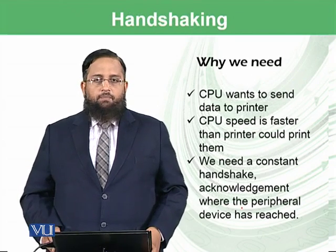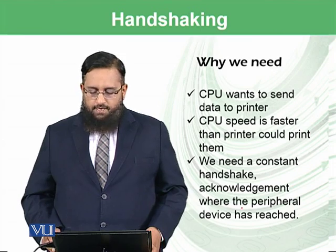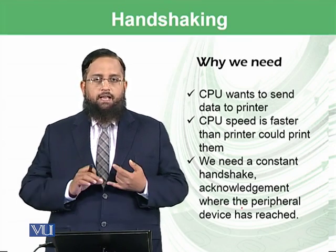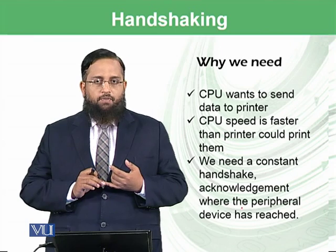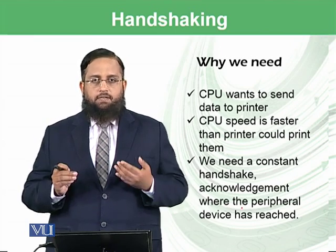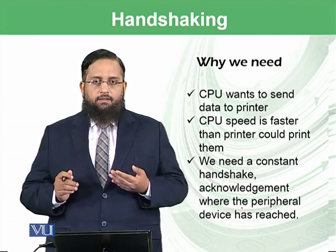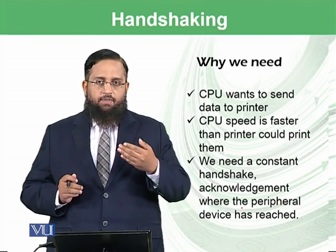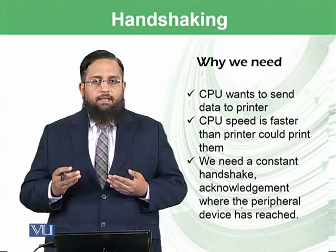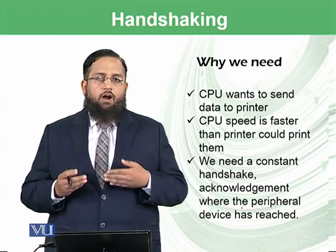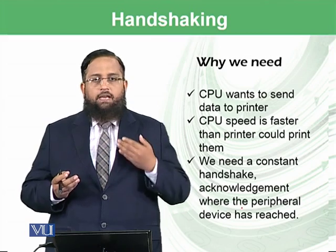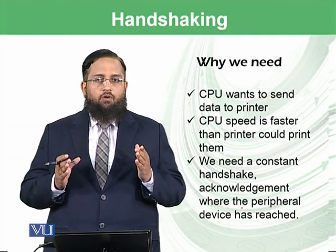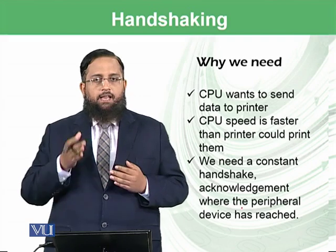The next topic is handshaking. The CPU wants to send data to the printer. As we mentioned, the speed of the CPU is very efficient — it can process billions of instructions per second. However, the speed of printing is not nearly as fast. If the CPU keeps sending data and the printer is not able to print it at the same speed, we will have a problem. So computer science follows a handshaking strategy.